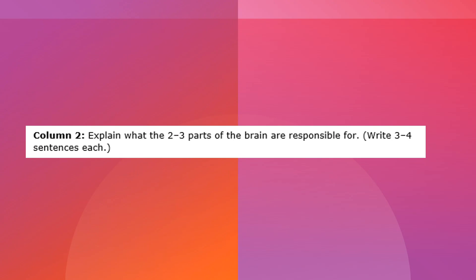Next we're going to move to column two. In column two you are going to explain what the two to three parts of the brain are responsible for, writing three to four sentences for each part. You're going to use the second column to discuss what each of these parts of the brain is responsible for. Also, if you look at your rubric you will know that this needs to have some detail or connection to perception, attention, learning, and/or memory, so make sure you include some information about that in your description.